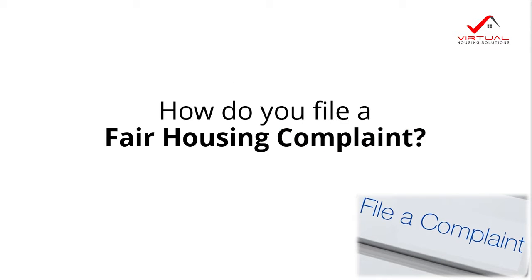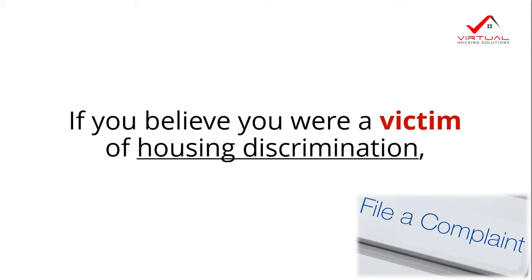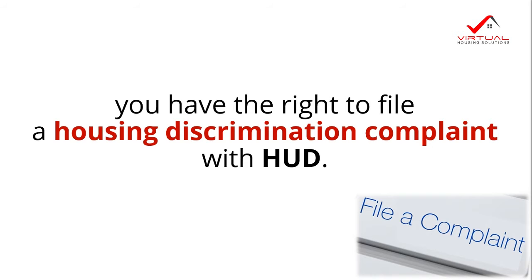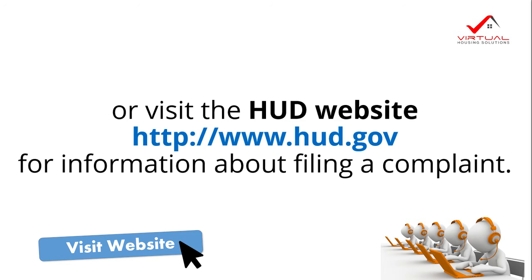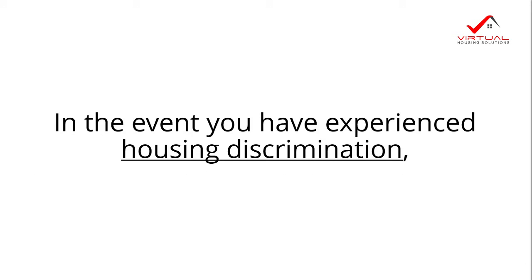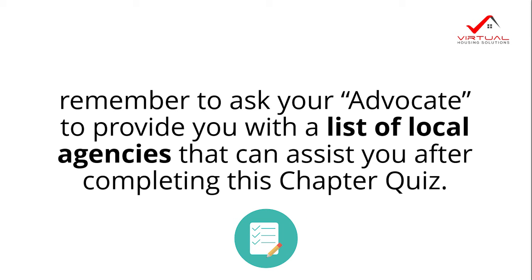How do you file a fair housing complaint? If you believe you are a victim of housing discrimination, you have the right to file a housing discrimination complaint with HUD. You can call the U.S. Department of Housing and Urban Development, HUD, at 800-669-9777, or visit the HUD website. In the event you have experienced housing discrimination, remember to ask your advocate to provide you with a list of local agencies that can assist you after completing this chapter quiz.